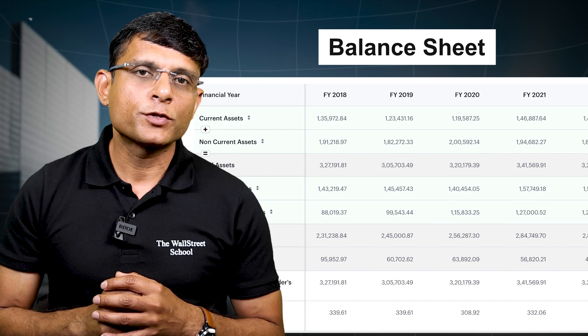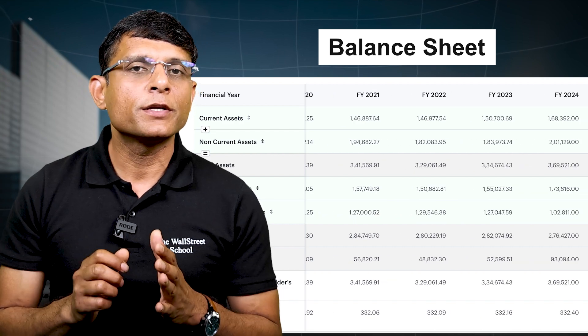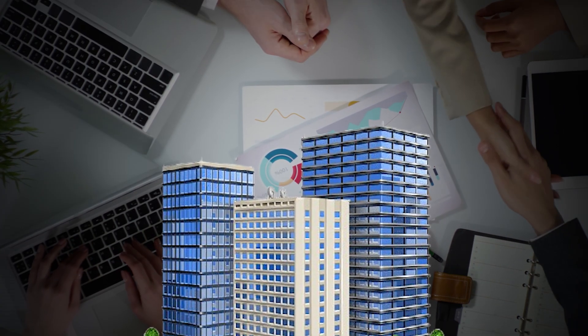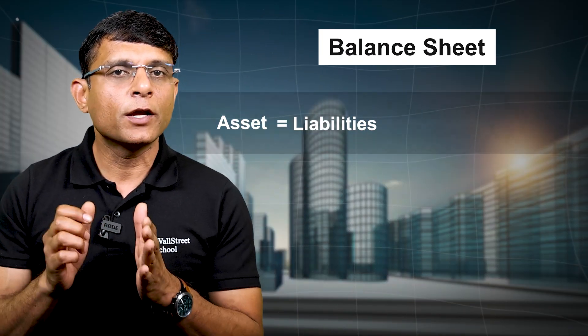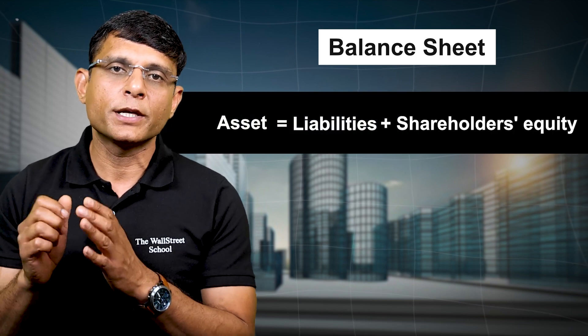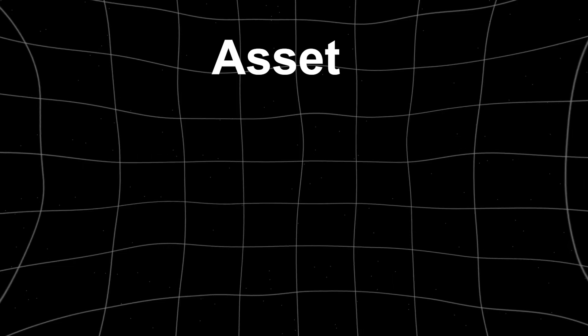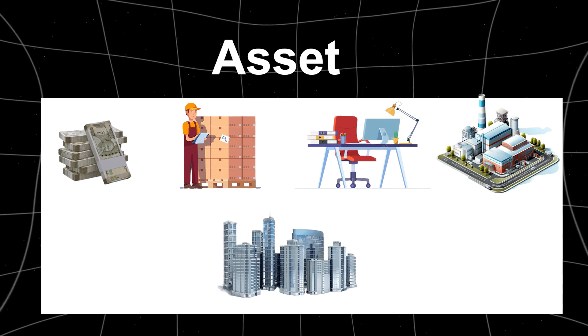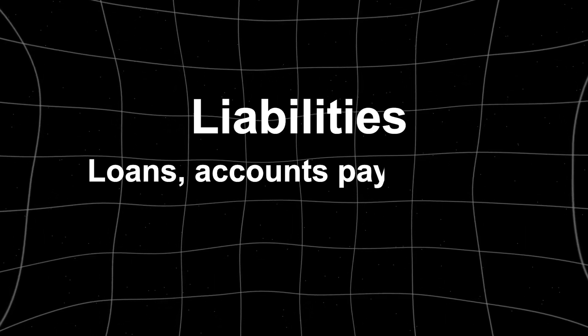The second important statement is the balance sheet. While the income statement shows performance over a period of time, the balance sheet is a snapshot of what the company owns and what it owes at a specific point in time. It follows this fundamental equation: Assets = Liabilities + Shareholders' Equity. Assets are what the company owns — cash, inventories, equipment, plant, building, etc. Liabilities are what the company owes — loans, accounts payable, etc. Shareholders' equity is the net value belonging to the shareholders.